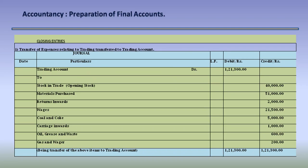Closing entry 1: transfer of expenses relating to trading. Trading Account Dr. 1,21,300 — to Opening Stock in Trade 40,000, Materials Purchased 51,000, Returns Inwards 2,000, Wages 21,500, Coal and Coke 5,000, Carriage Inwards 1,000, Oil, Grease and Waste 600, Gas and Water 200. Total comes to Rs. 1,21,300. These balances are extracted from the trial balance and transferred to the trading account.